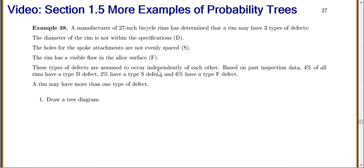These types of defects are assumed to occur independently of each other. Based on past inspection data, 4% of all the rims have a type D defect, 2% have a type S, and 6% have a type F. A rim may have more than one type of defect.